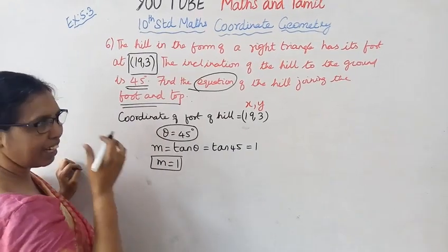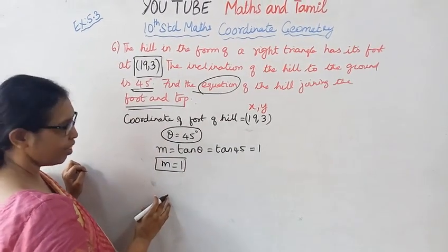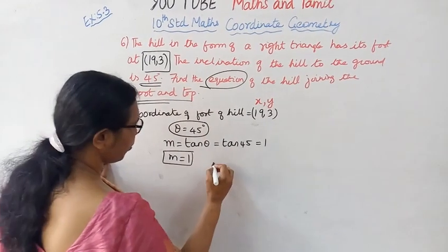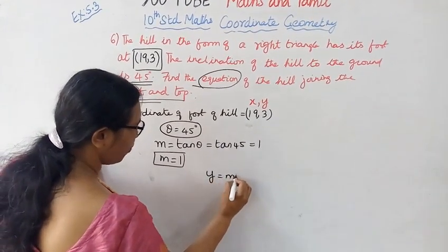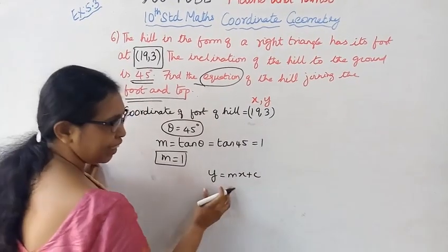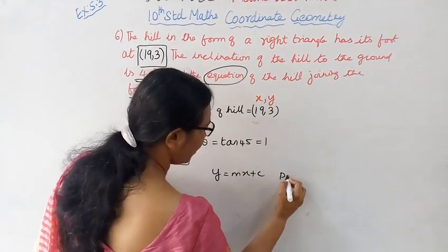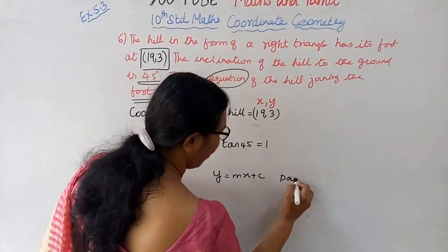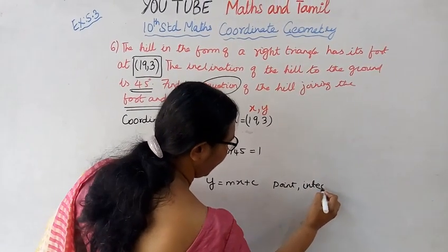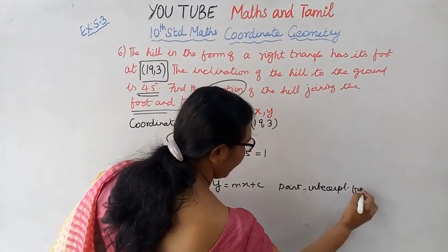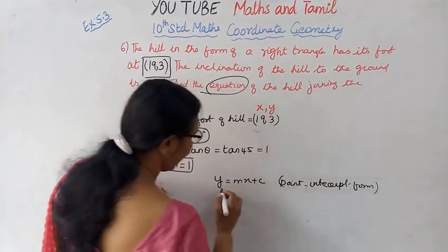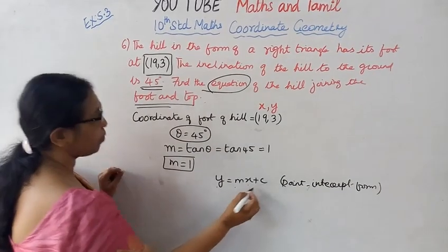Y intercept equation is Y equal to Mx plus C. This is point intercept formula, point intercept form.